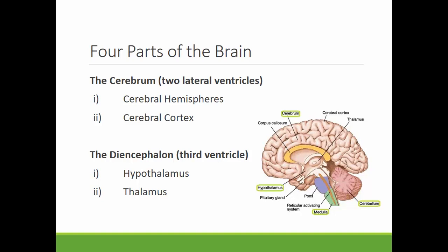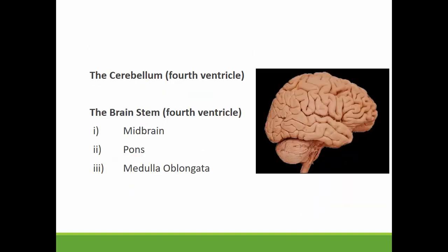When we look at the brain, there are four distinct parts. The cerebrum, which is the topmost part of the brain, and we can look at it in terms of the hemispheres and the cerebral cortex. The diencephalon, which is made up of the hypothalamus and thalamus, is associated with the third ventricle.